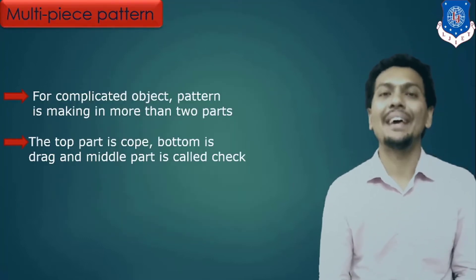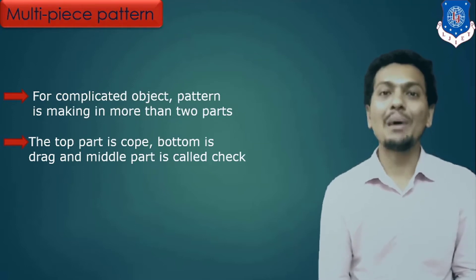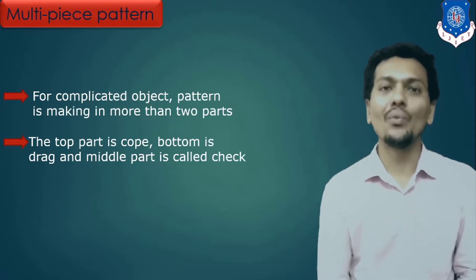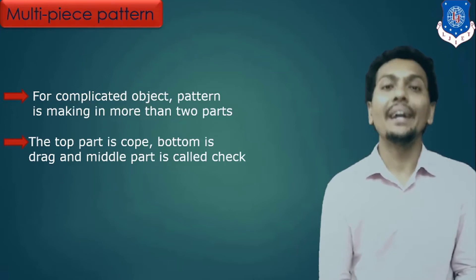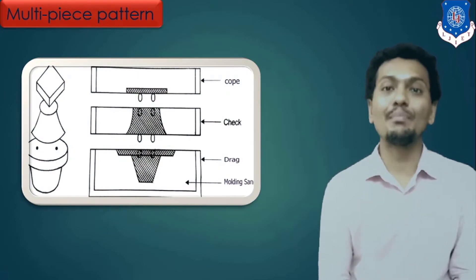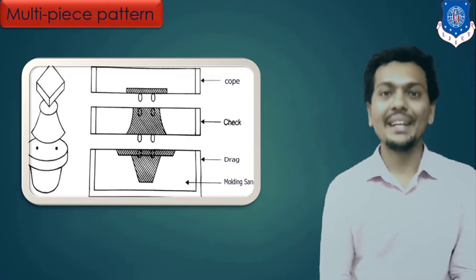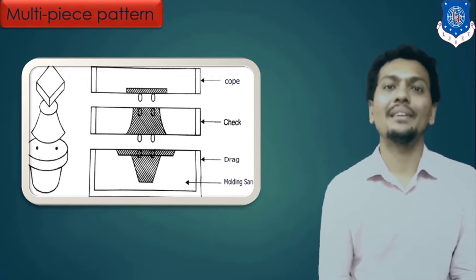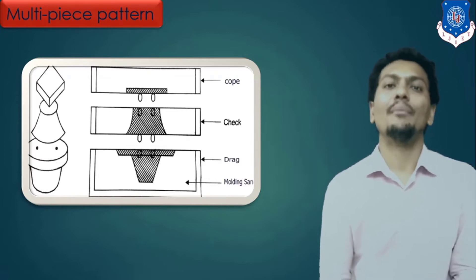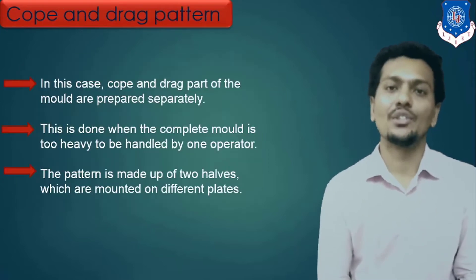After split pattern, here I mentioned the multi-piece pattern. Multi-piece pattern is nothing but a pattern that is made of more than two parts. So if you go for multiple parts of the pattern, it is known as a multi-piece pattern. Here, for our case, the multi-piece pattern is made of three parts. Multi-piece pattern can be three, four, or more than that parts.